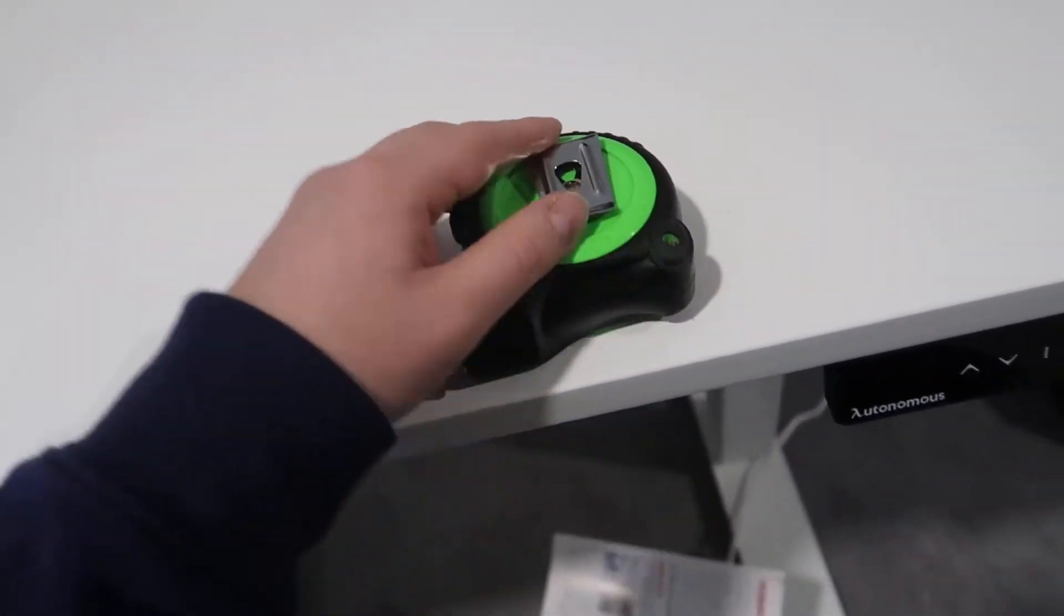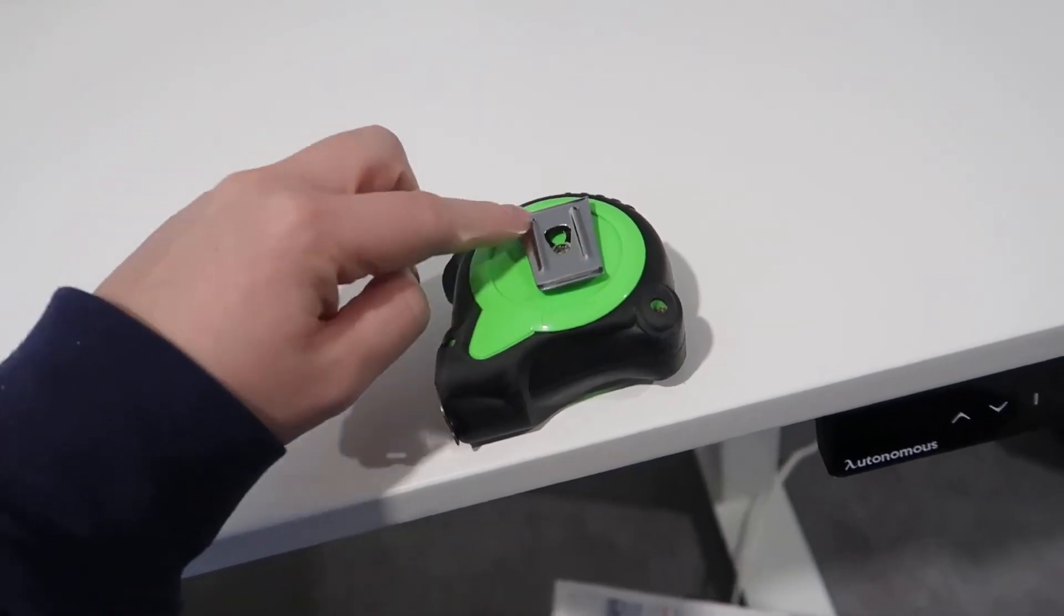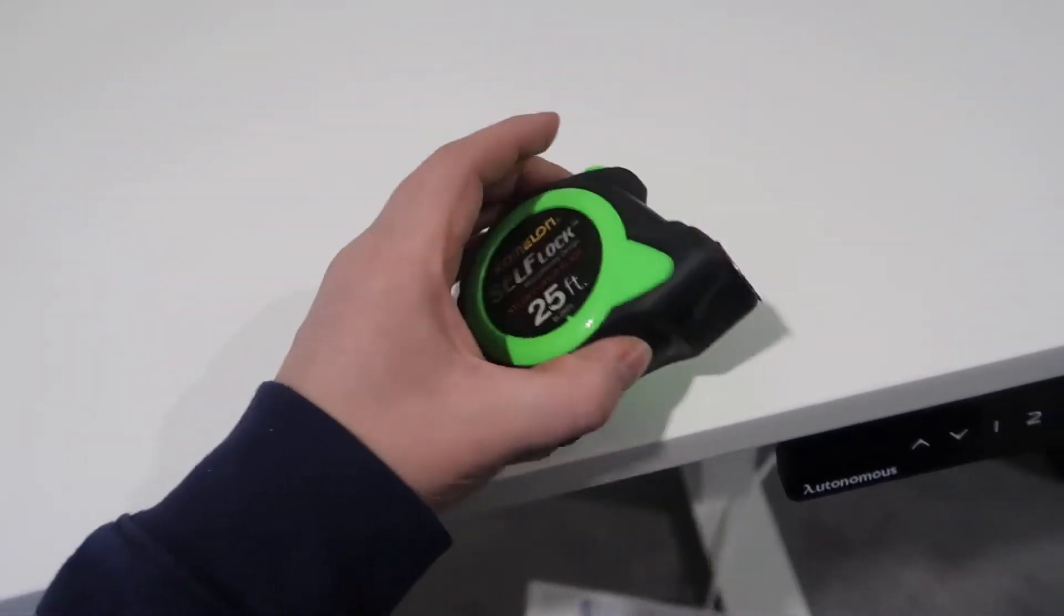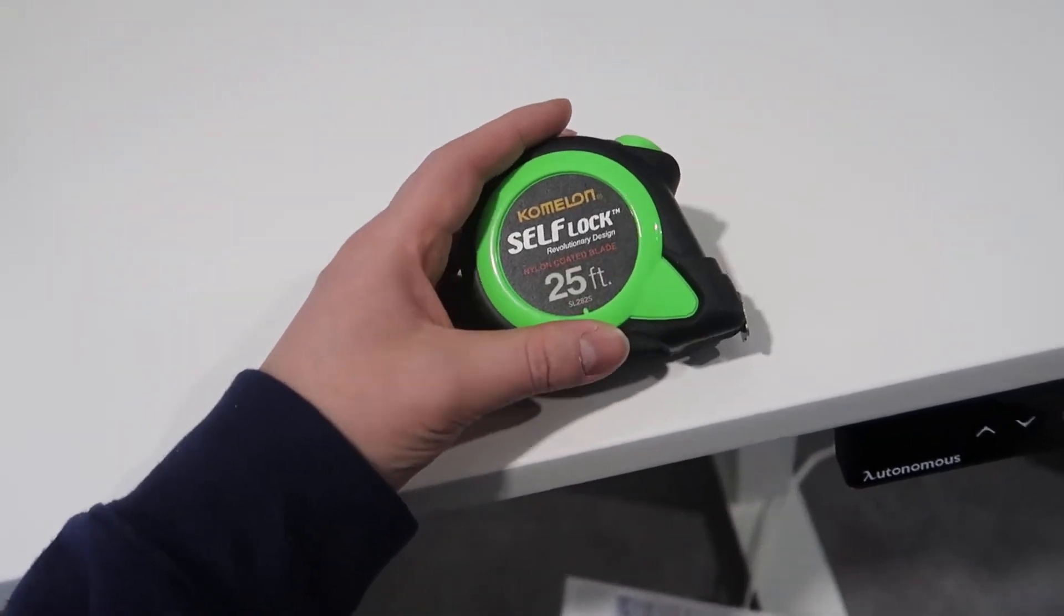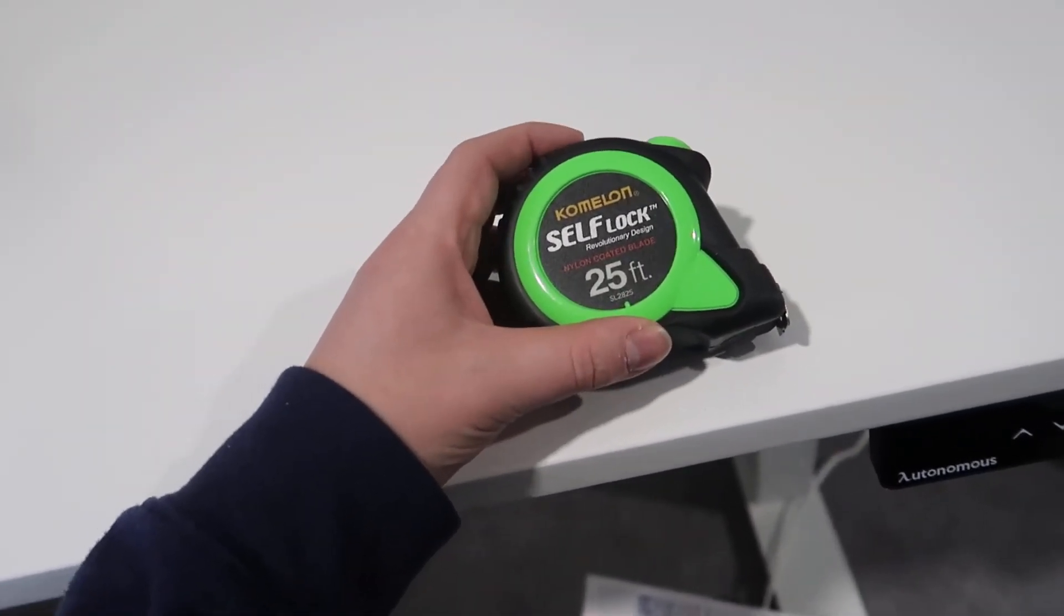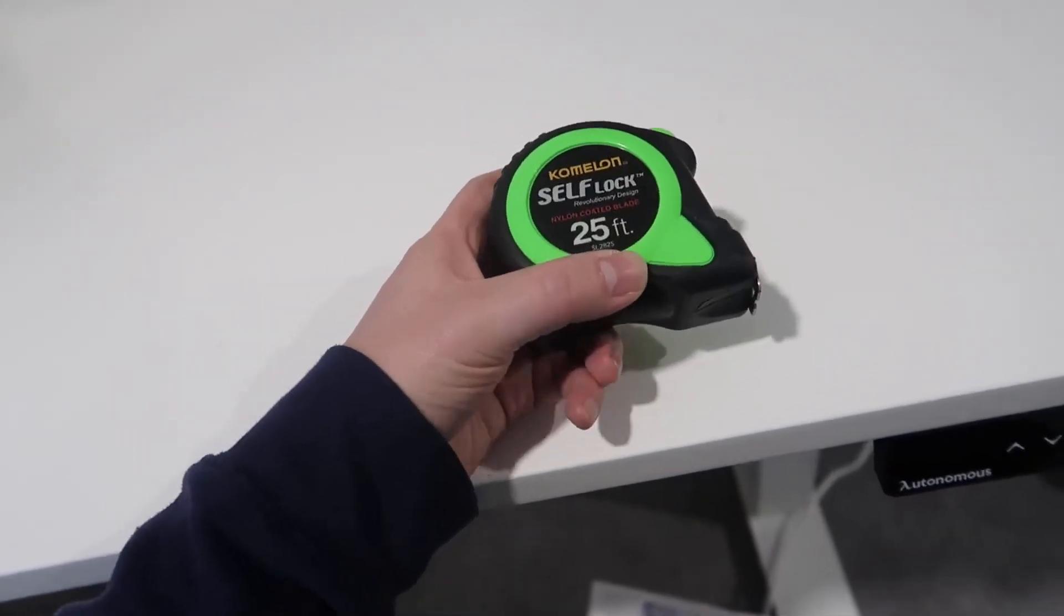The other thing is you have a nice clip here. If you want to put this on your belt, you have a sturdy clip on the other side. I'm very happy with this tape measure. It has a nylon-coated blade, and this one's up to 25 feet. Just get whatever you need, but this is a good standard size.